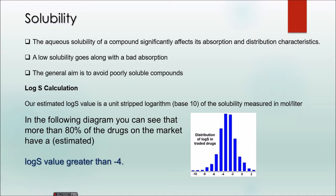Let's discuss some of the drug-like properties. One such property is solubility. The aqueous solubility of a compound significantly affects its absorption and distribution characteristics. A low solubility goes along with bad absorption, so it should dissolve properly to a maximum extent. The general aim is to avoid poorly soluble compounds. When determining whether your drug is drug-like, the first thing is solubility — your drug should have maximum solubility.